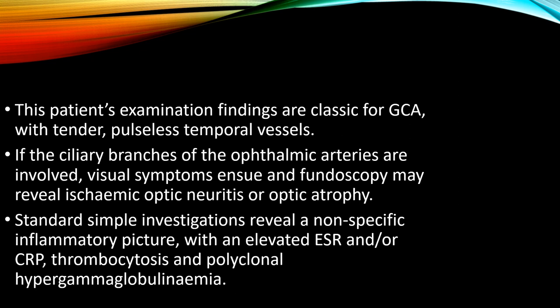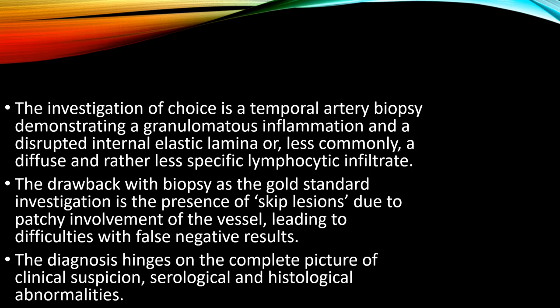The patient's examination findings are classic for giant cell arteritis with tender, pulseless temporal vessels. If the ciliary branches of the ophthalmic arteries are involved, visual symptoms ensue and fundoscopy may reveal ischemic optic neuritis or even optic atrophy. Standard investigations reveal a non-specific inflammatory picture with elevated ESR and/or CRP, thrombocytosis, and polyclonal hypergammaglobulinemia. The investigation of choice is temporal artery biopsy demonstrating granulomatous inflammation and a disrupted internal elastic lamina, or less commonly a diffuse lymphocytic infiltrate. The drawback of biopsy as the gold standard is the presence of skip lesions due to patchy involvement of the vessel, leading to difficulties with false negative results.